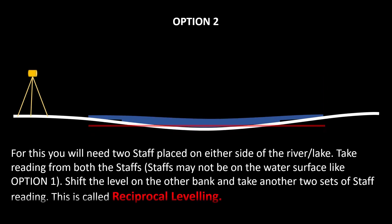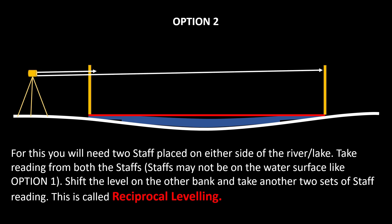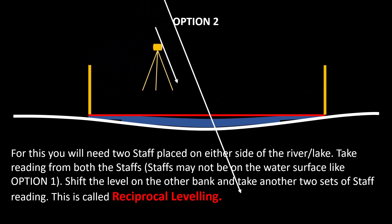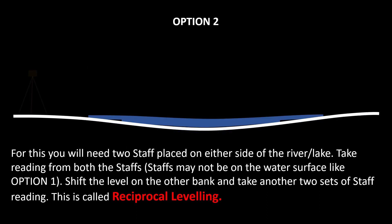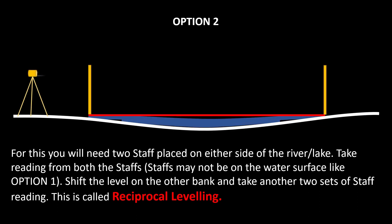The best option will be to carry out reciprocal leveling. You need to place two staffs on either side of the river bank. Take the reading from both staffs without moving the level. Then shift your level to the other bank. Don't move the staffs. Now take another set of readings of the staffs.